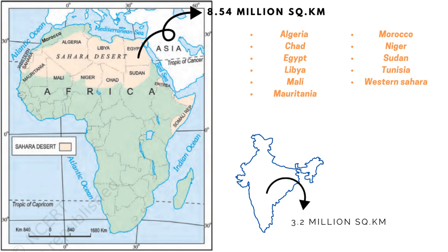The Sahara Desert lies in the northern part of Africa and is the largest desert in the world, comprising an area of about 8.54 million square kilometers. To put that in perspective, India is 3.2 million square kilometers — the Sahara is almost three times the size of India. This desert zone includes 11 countries: Algeria, Chad, Egypt, Libya, Mali, Mauritania, Morocco, Niger, Sudan, Tunisia, and Western Sahara.